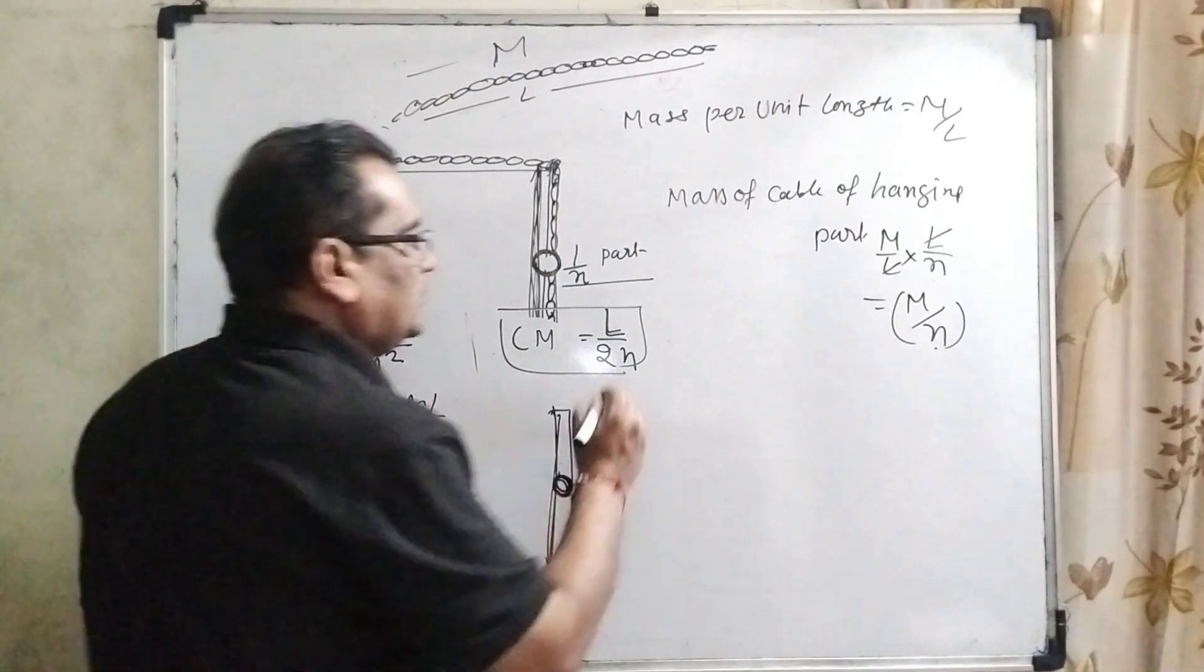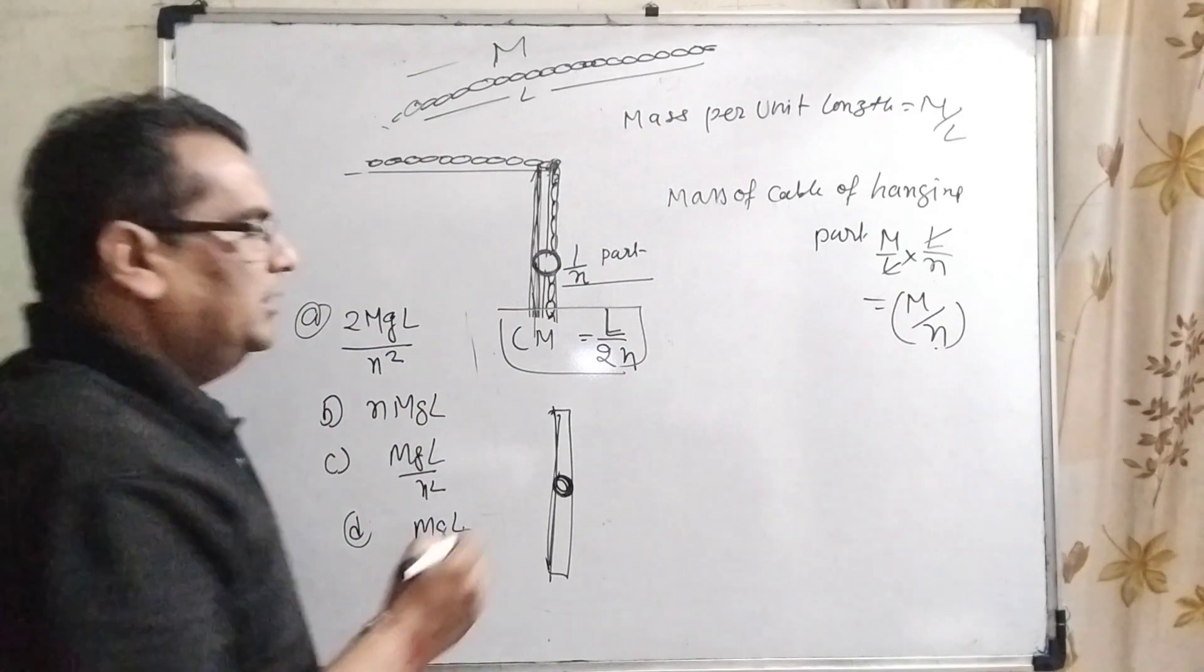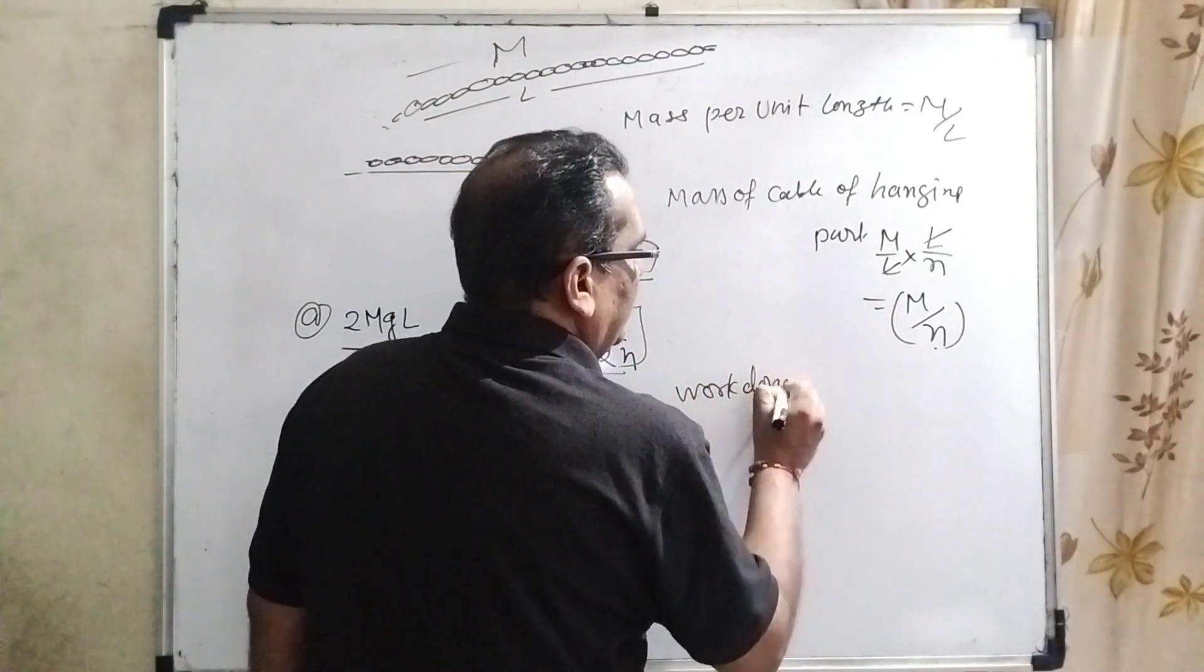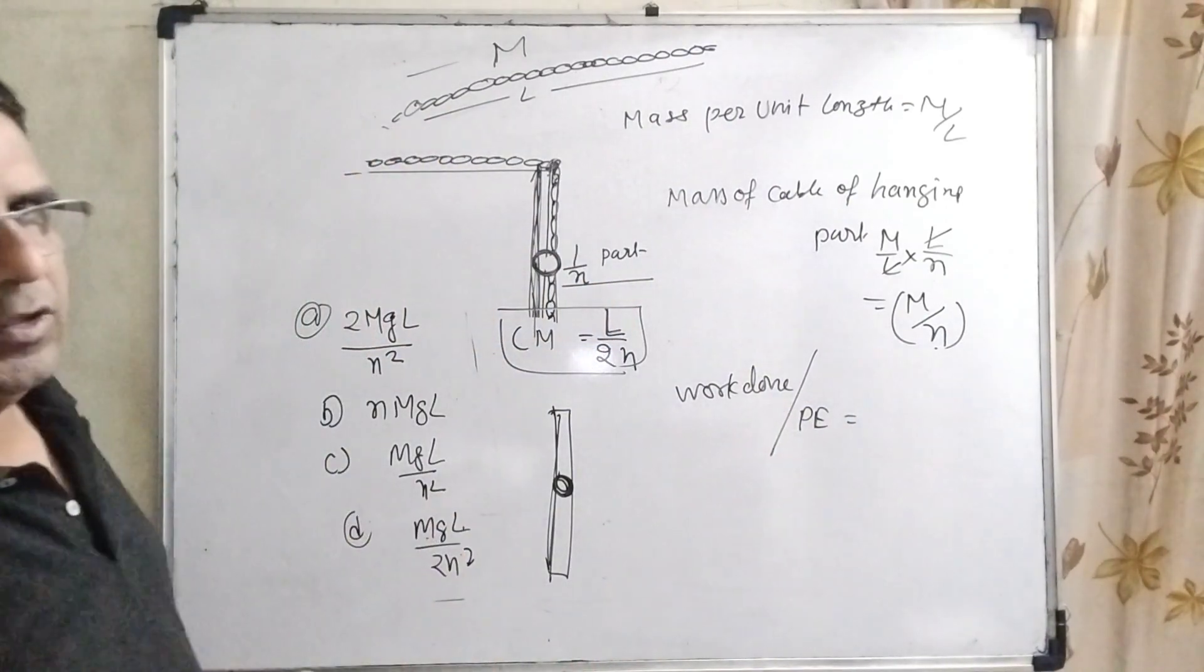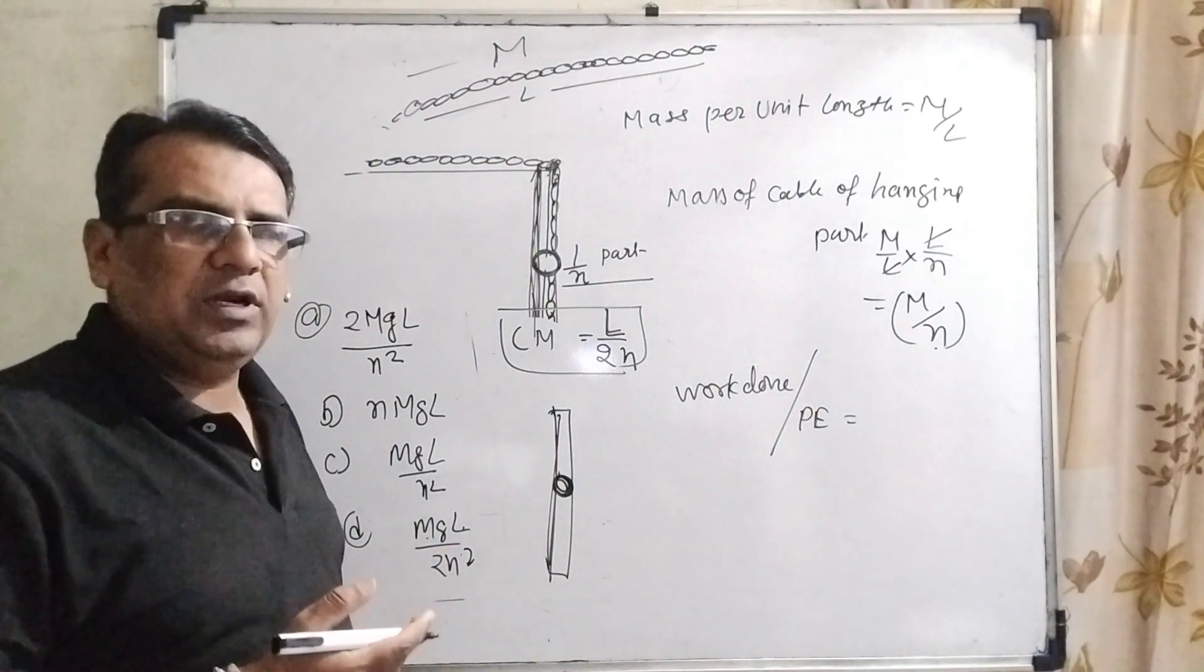Now the energy to pull this hanging cable is the work done. Work done means this is the potential energy. This work done is equal to the potential energy according to work-energy theorem.